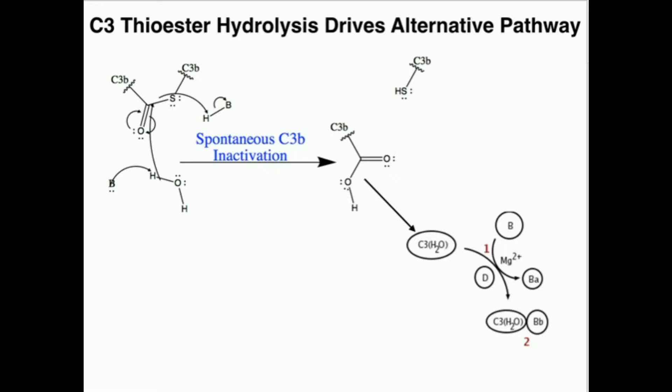Now, it turns out that hydrolyzed C3 is actually going to be able to combine with another protein called protein D. Protein D is a serine protease, which is actually going to split another protein called protein B into, and this is where it gets confusing, into BA and BB. When we have proteins that are split in the complement system, the component that floats away is called the A component. The component that remains bound is the B component. This is just really confusing because the protein itself is called B. So the part that floats away is BA, and the part that stays is BB. That BB remains bound to the hydrolyzed C3.